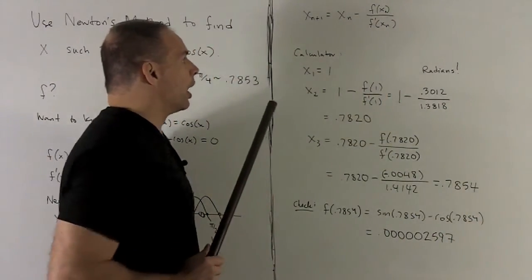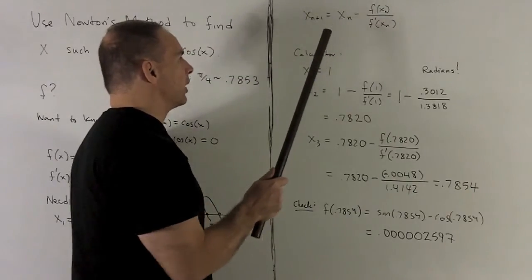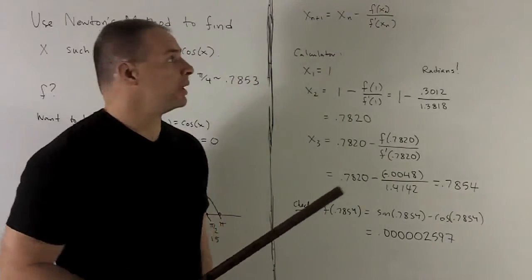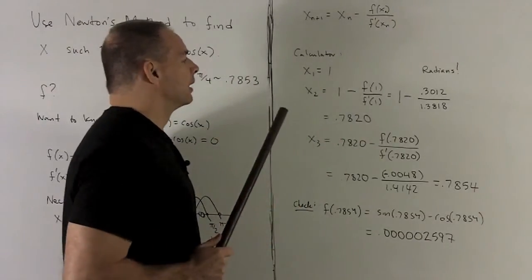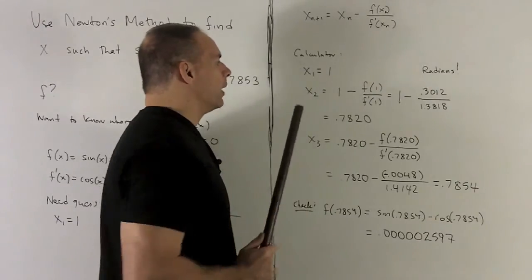All right. So that's my x1. I have my gadget for getting from x1 to x2, x2 to x3, and so on. It's going to be given by this formula. So let's push ahead and see what happens. I start off with x1 equal to 1.